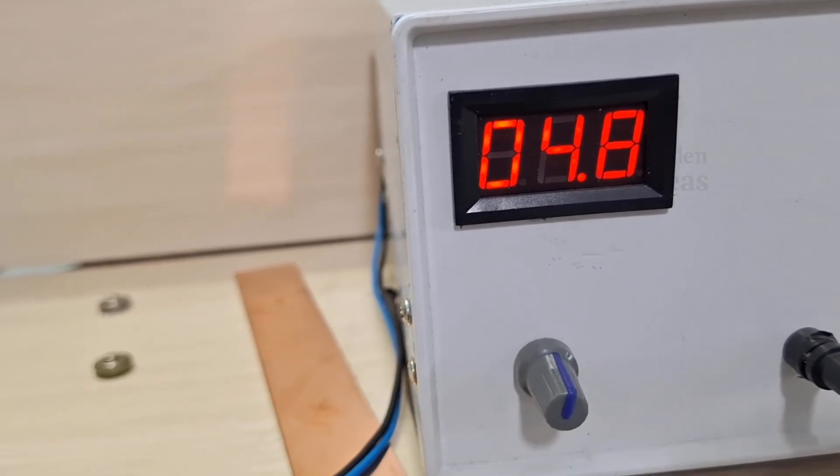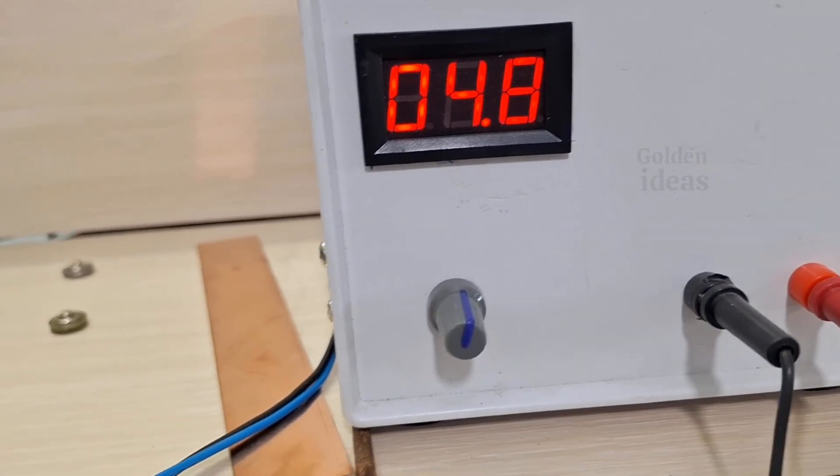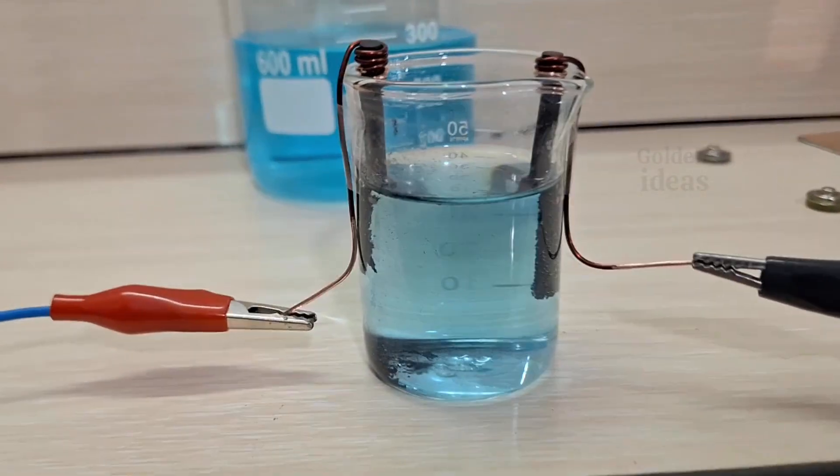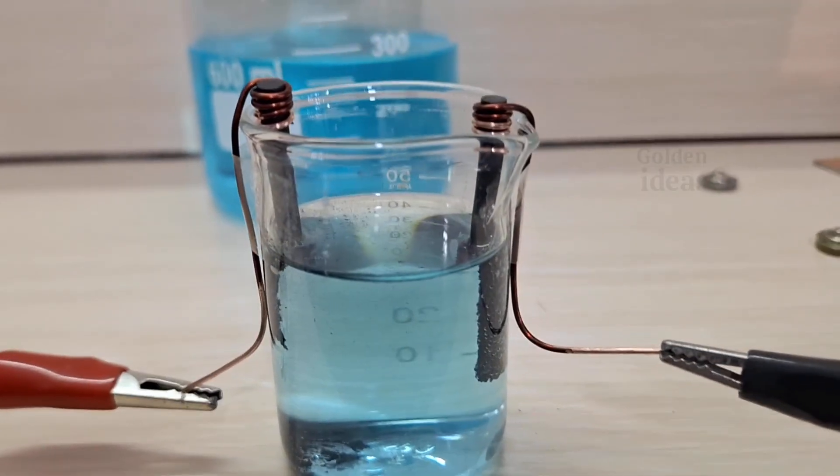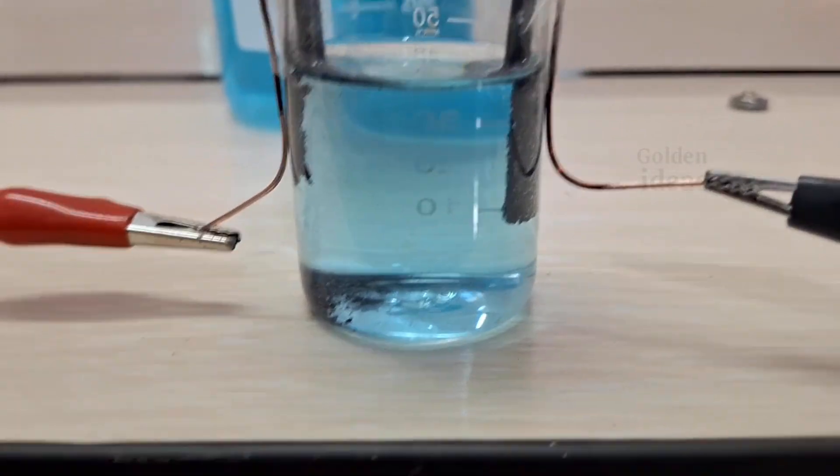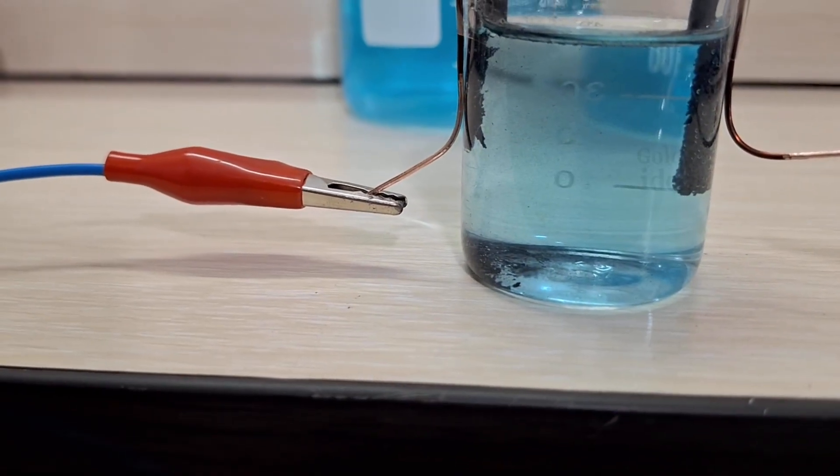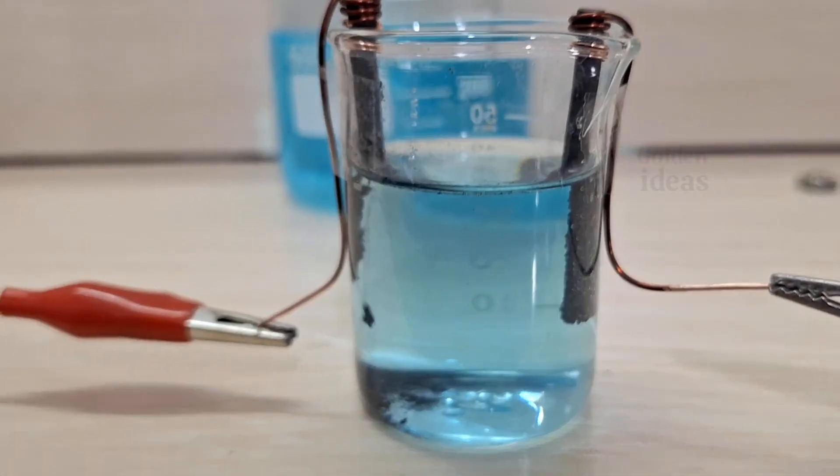Let me check the voltage. Yes, it's set to 5 volts. Interestingly, there's a fine powder forming on the graphite rod connected to the positive terminal, but it's settling at the bottom. We'll need to give it a bit more time to see what exactly is happening.